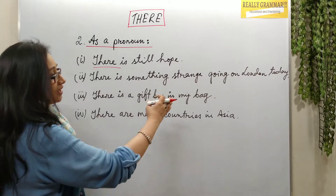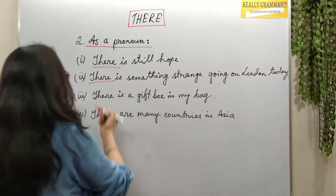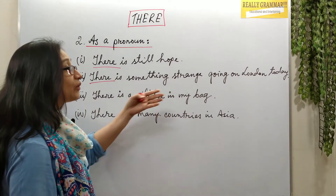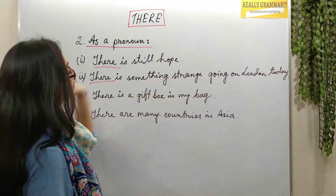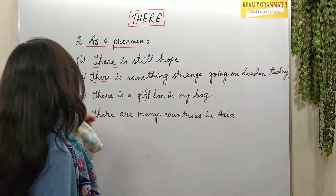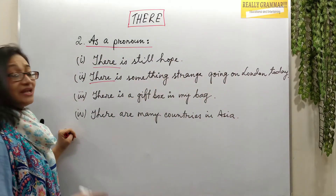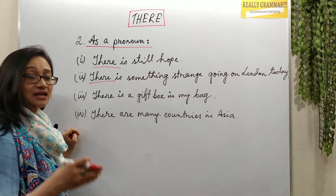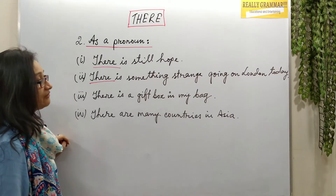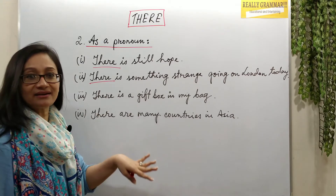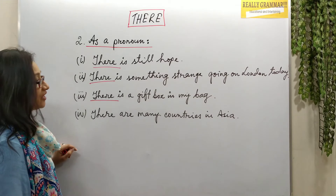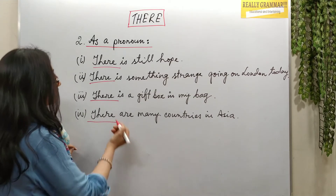'There is something strange going on in London today' — this is also about 'there' as the subject. To show that something exists: 'There is a gift in my bed.' 'There are many countries in Asia.'